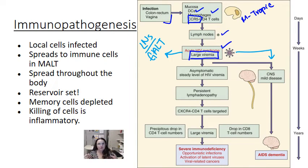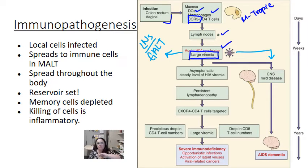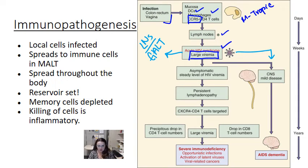Without treatment, there will be two to three logs more infected cells in the lymphoid tissue than in the peripheral blood. So if you take blood from an HIV-infected patient you'll detect virus, but you can predict there's so much more in the lymph node because there are so many more target cells there.